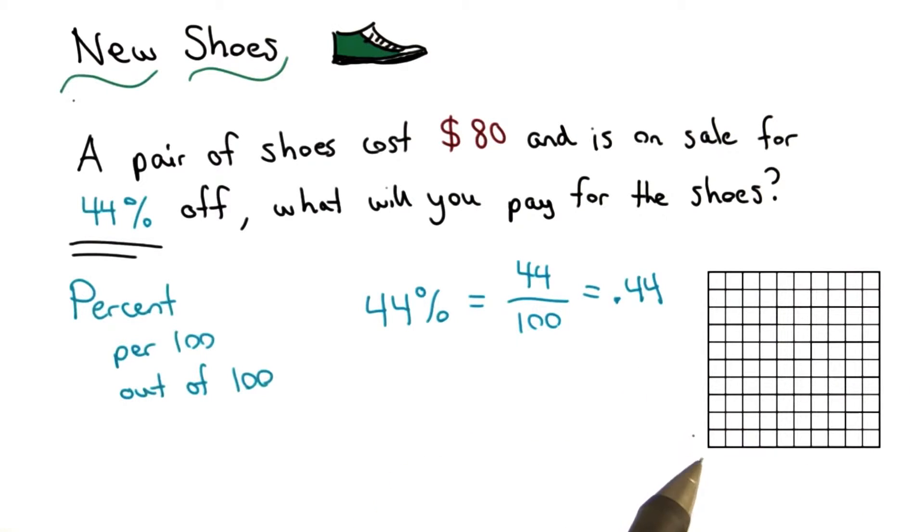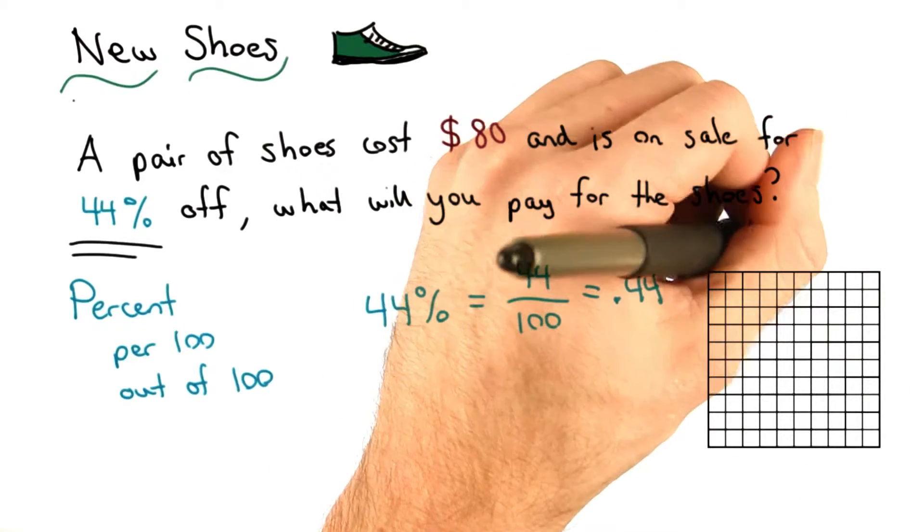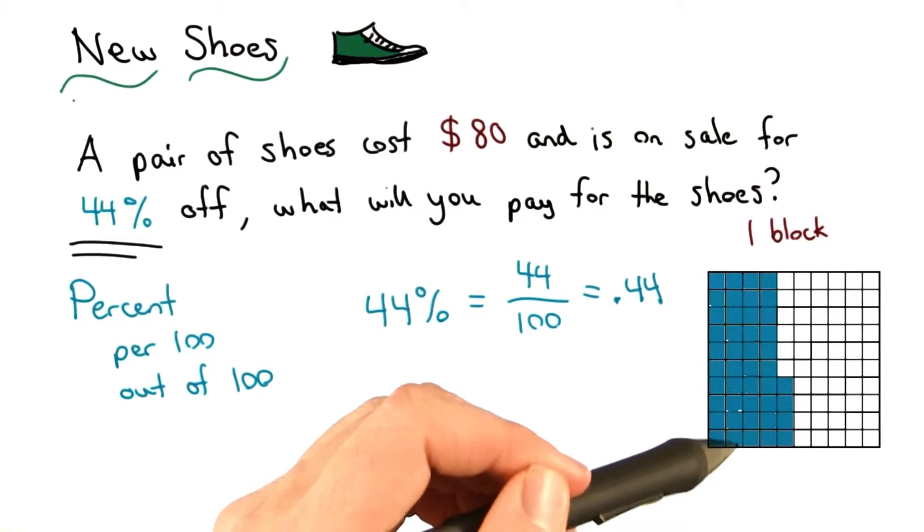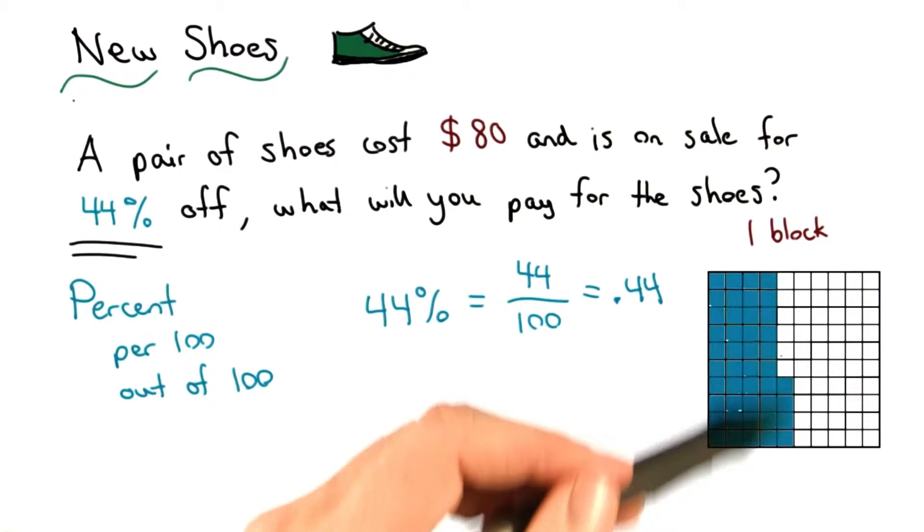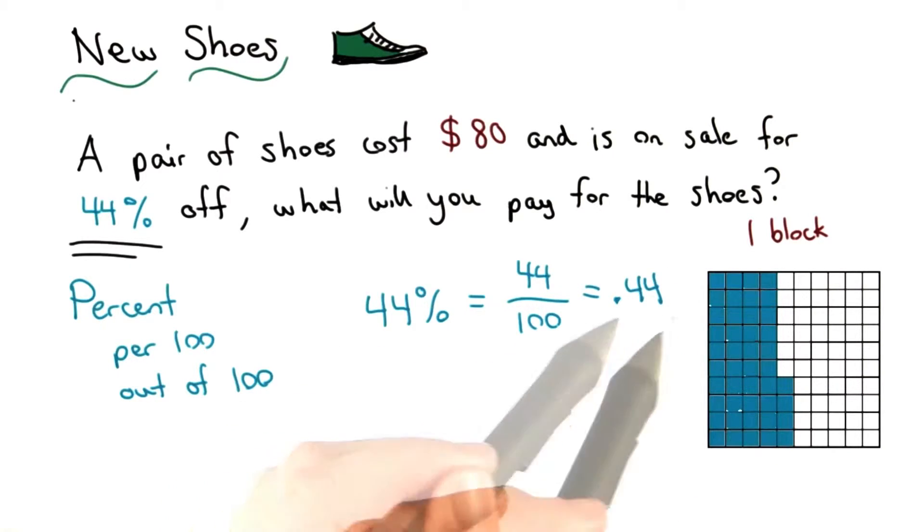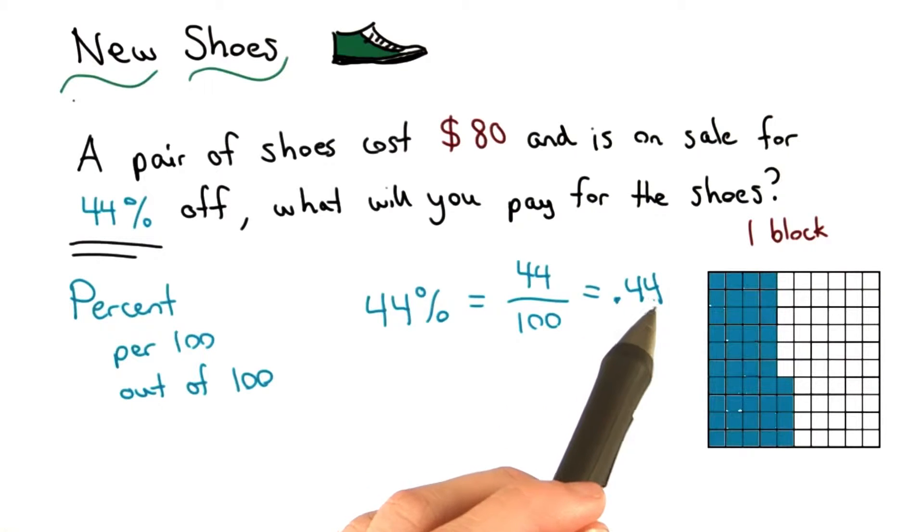Here's a hundred pieces. I have a grid of a hundred squares, or I have one block. Of these hundred pieces, I'm going to have 44 of them. So I'd have 10, 20, 30, 40, 44 blocks out of a hundred, or 44 hundredths. And that's this written as a decimal, 44 hundredths.